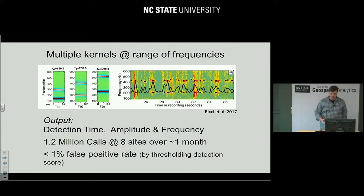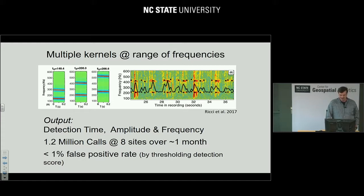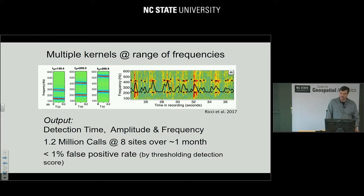For a month at eight sites, we detected 1.2 million toadfish calls. We can set the threshold by sub-sampling data and looking at some files manually. Setting the threshold high enough, the false positive rate is about one percent — a really good method. There's no way to get information on 1.2 million calls manually.